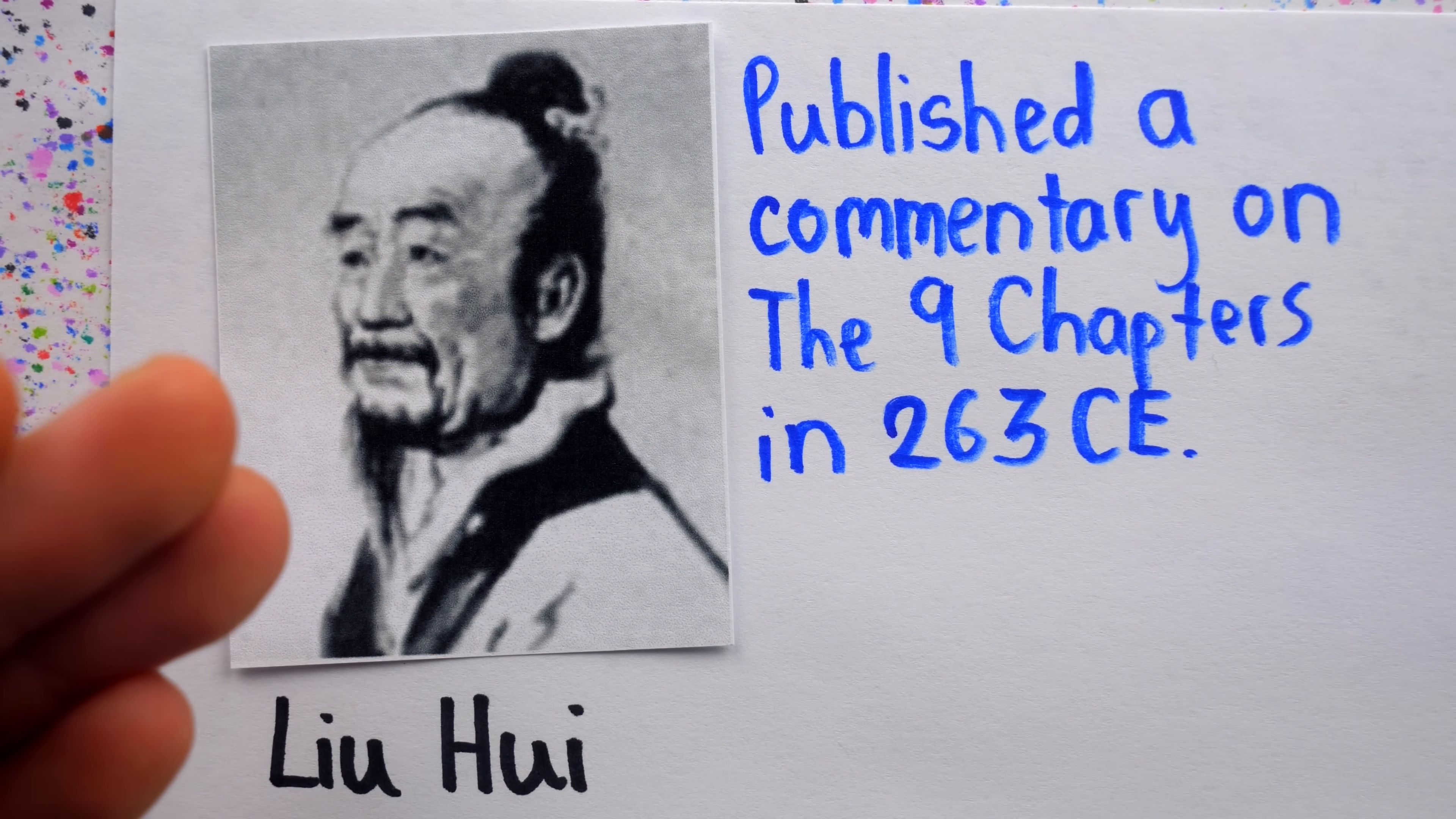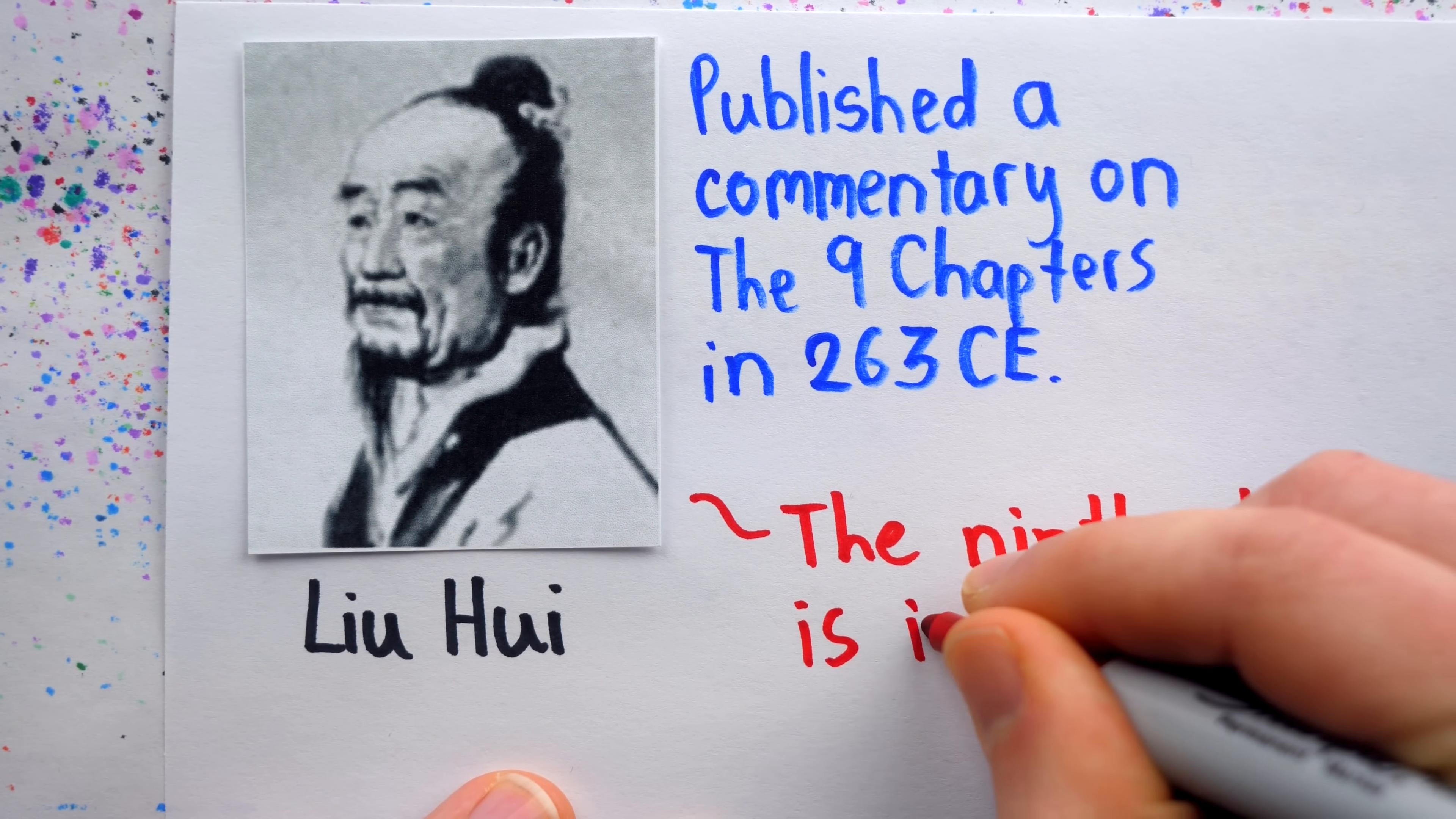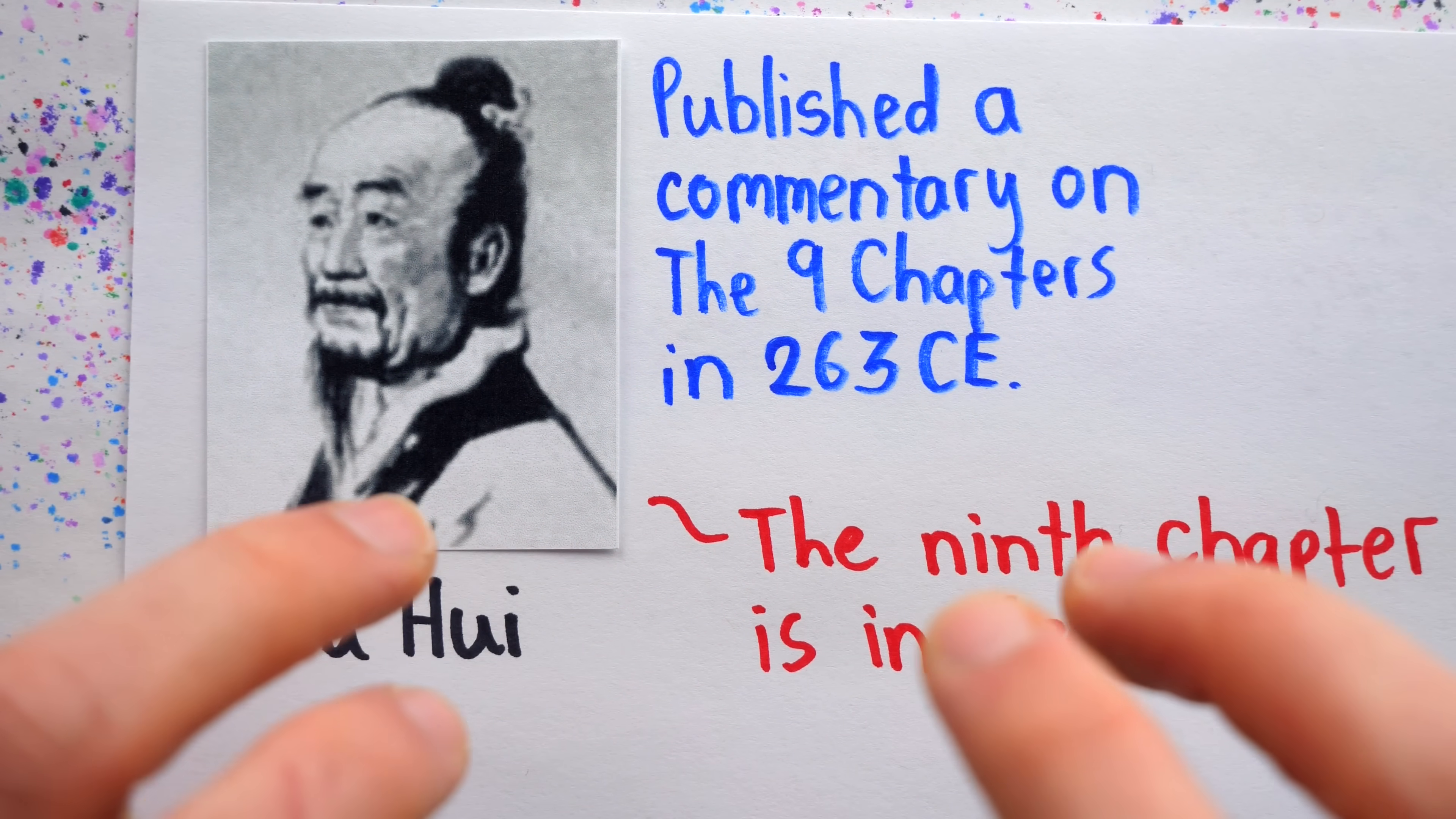Liu Hui was a descendant of Marquess of Zixiang and lived in Xiaowei, and in the preface of his commentary on the Nine Chapters, Liu Hui describes the inadequacy of the Ninth Chapter and its treatment of right triangle problems. So, as part of his commentary on the work, he wrote an extension of Chapter 9, or an appendix.